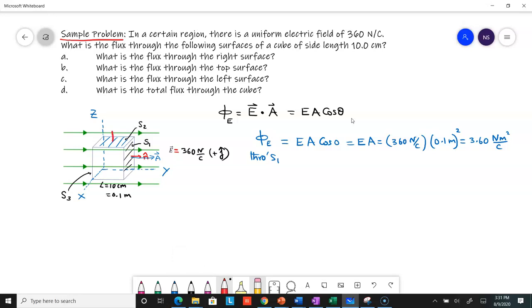Similarly, I can calculate the flux through the top surface. The normal vector is the outward drawn normal that way. You can probably see right away that the area vector is perpendicular to the electric field vector.